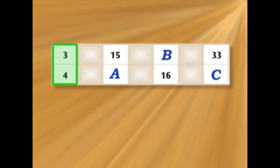3 over 4 is the same as 15 over A. How much do we multiply 3 by to get 15? 5 times 3, 15. So 5 times 4 is 20. So 3 over 4 is the same as 15 over 20.